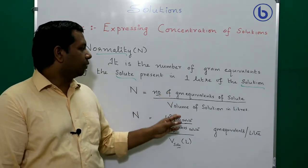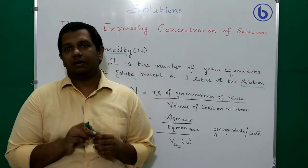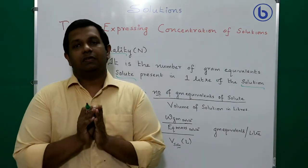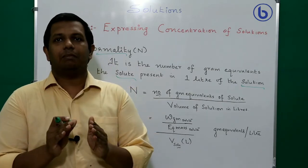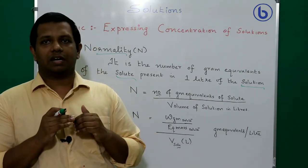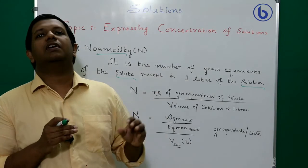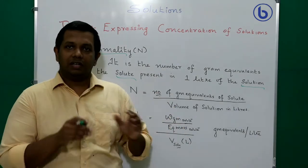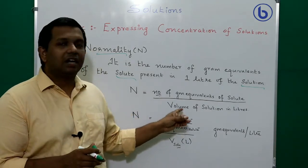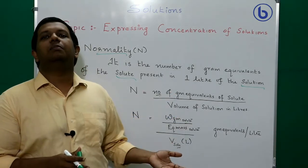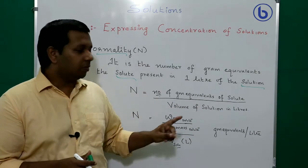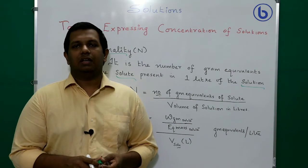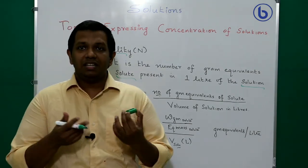Now, what do we mean by gram equivalents? Number of moles is weight in grams divided by molecular mass. Similarly, number of gram equivalents is weight in grams of the solute divided by the equivalent mass of the solute — instead of molecular mass, we use equivalent mass.